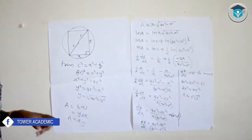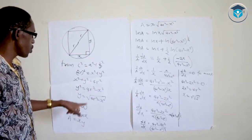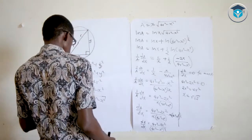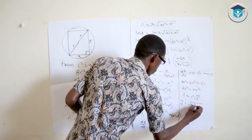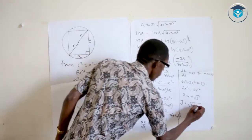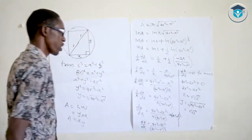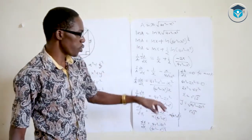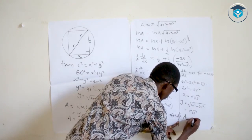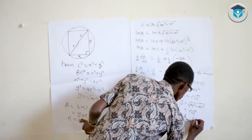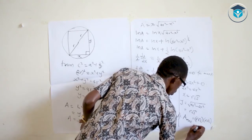We have x = r√2. Now substituting back to find y: y = √(4r² − x²) = √(4r² − 2r²) = √(2r²) = r√2. So both x and y equal r√2. The maximum area is A_max = x · y = r√2 · r√2 = 2r².